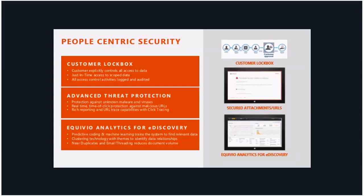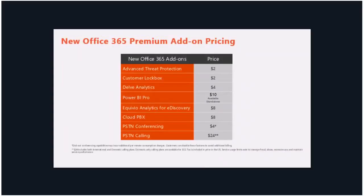Analytics for e-discovery — especially for legal holds and different lookups — allows you to look at email threading and cluster technologies to identify data relationships within your email. All of these E5 features, including cloud PBX, PSTN calling, and conferencing, are also available as standalone SKUs. Customers already on E1 who just want to add Power BI Pro can do so as a standalone for $10 a month.